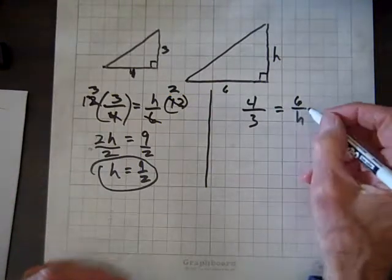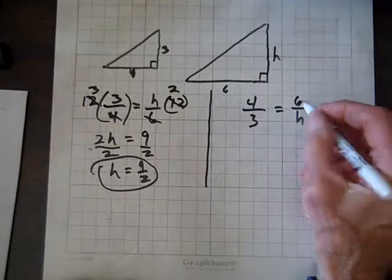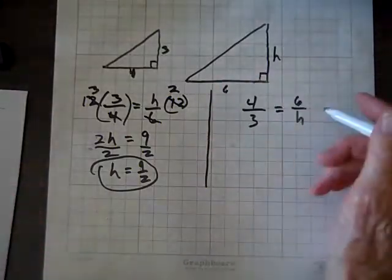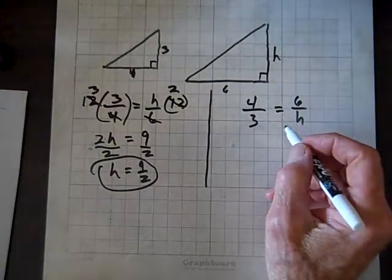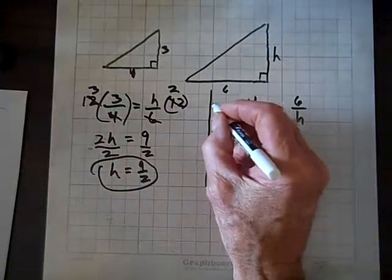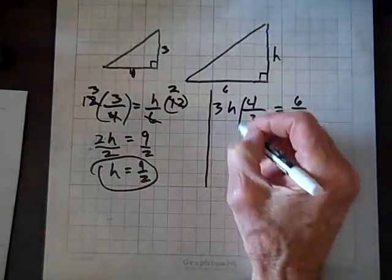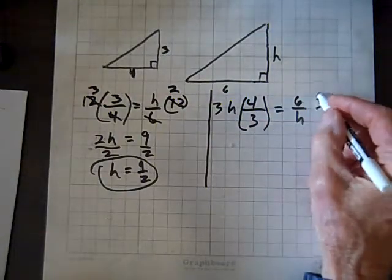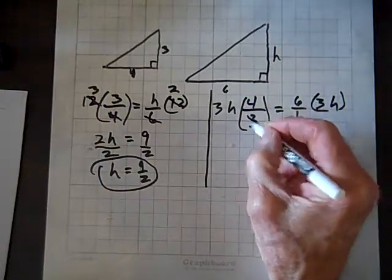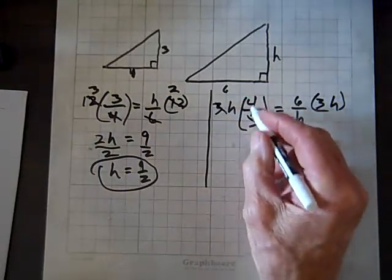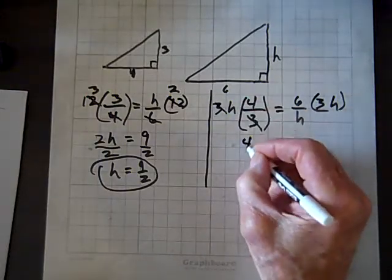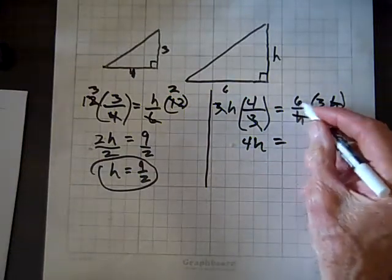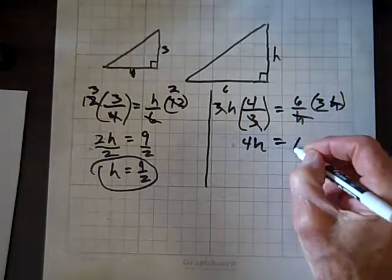Now, we have to multiply by something to get that H in the numerator. Our first task is to get H upstairs. So what's the least common multiple of 3 and H? Well, it's 3H. So we'll multiply both sides by 3H. And you'll see why we're doing that. Here the 3s divide out, and you get 4 times H, 4H. Here the Hs divide out, and you get 6 times 3, that's 18.